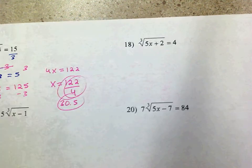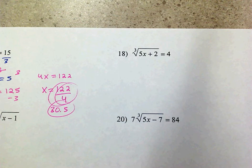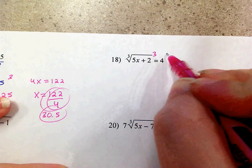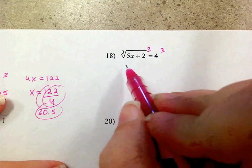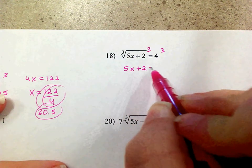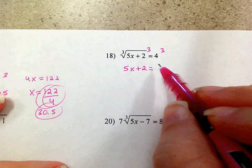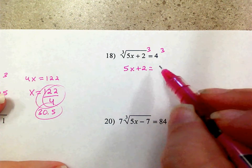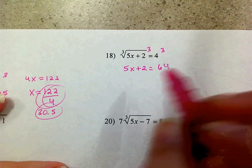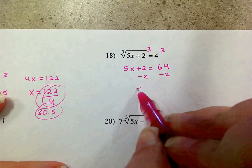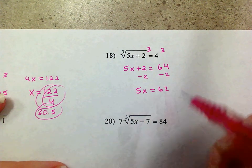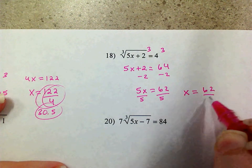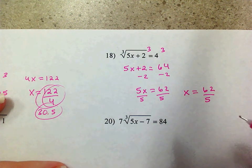Let's look at 18. Similar situation — I've got a cubed root equal to a number. In order to get rid of a cubed root, we cube both sides. So I've got 5x plus 2 equals 4 cubed, which is 64. Then solving: subtract 2, so 5x equals 62, divide by 5. x equals 62 fifths, or 12.2.